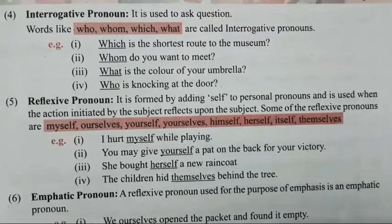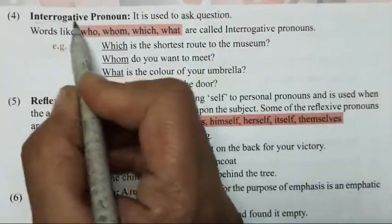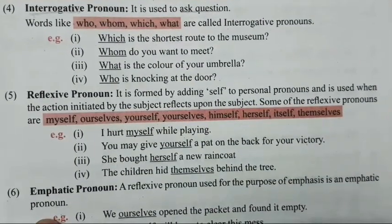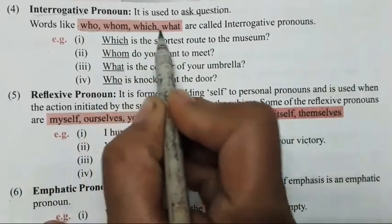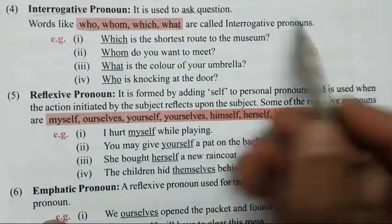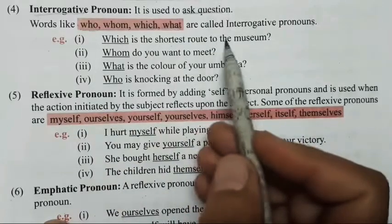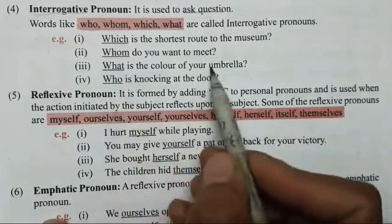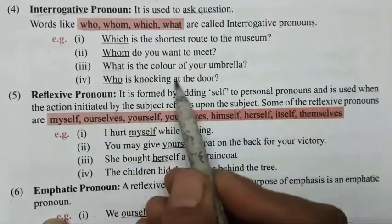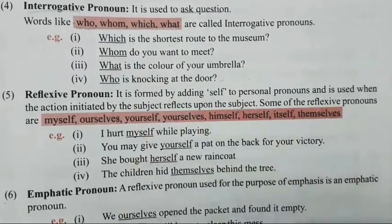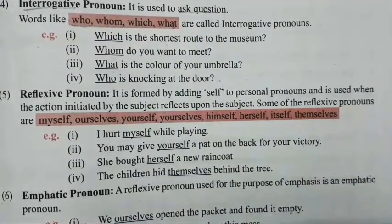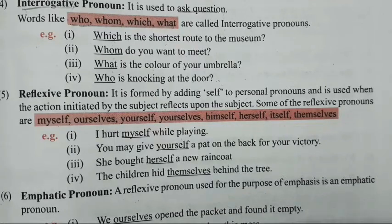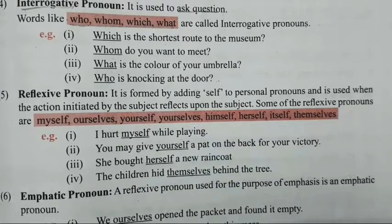Next is interrogative pronoun — it is used to ask questions. Interrogative word se hi pata chal jaata hai. Who, whom, which, what — these are called interrogative pronouns. Examples: 'Which is the shortest route to the museum?' 'Whom do you want to meet?' 'What is the color of your umbrella?' 'Who is knocking at the door?' So interrogative pronoun mein hum identify ya fill in the blanks karte hai.